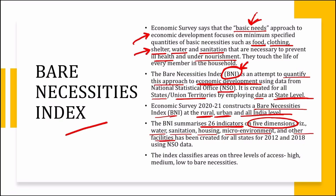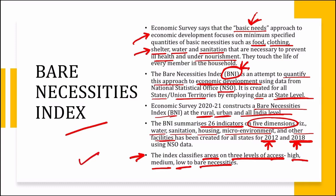The BNI has summarized 26 indicators on five dimensions. These five dimensions are water, sanitation, housing, micro-environment, and other facilities. The BNI data covers two years, that is, 2012 and 2018, and it compares data across these two years. Also, the index classifies areas on three levels of access to bare necessities, that is, high, medium and low.